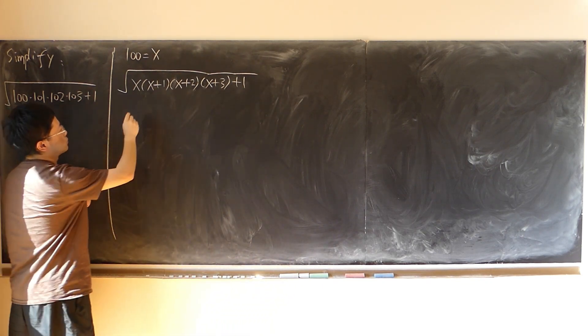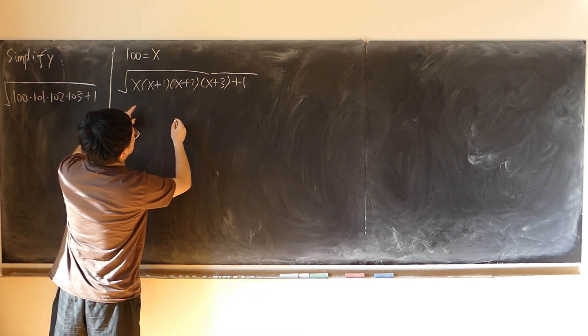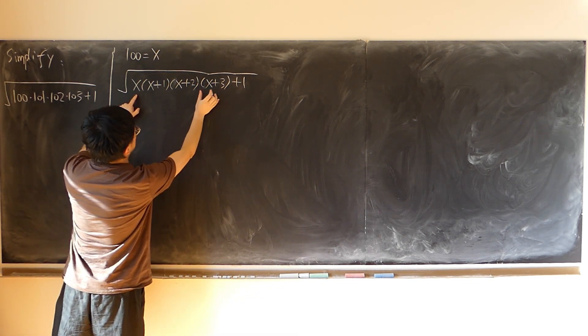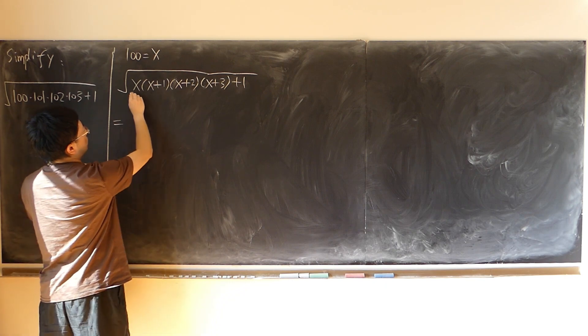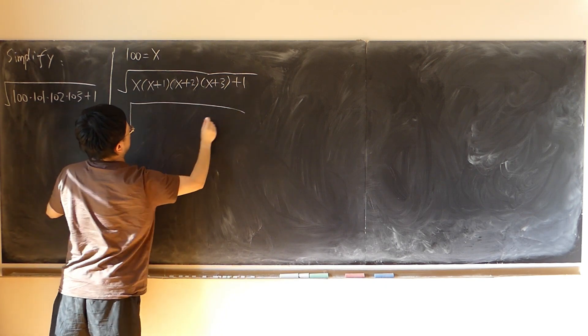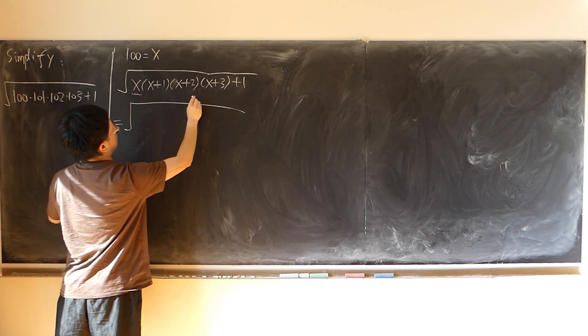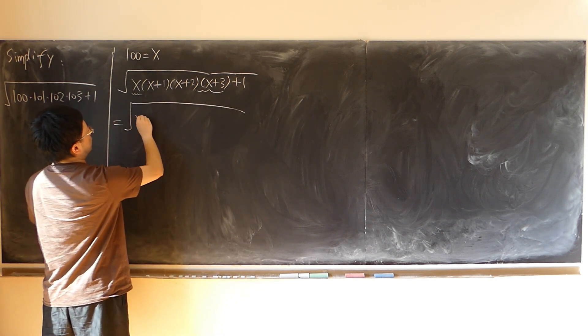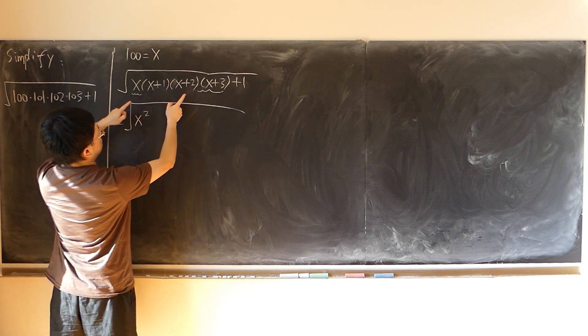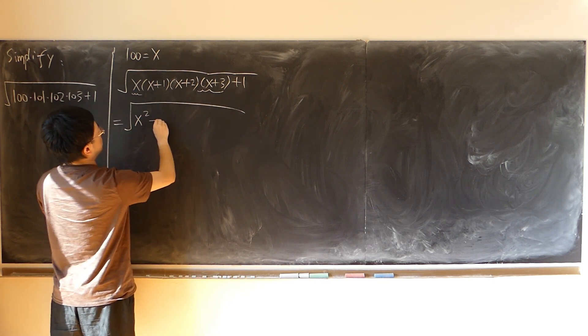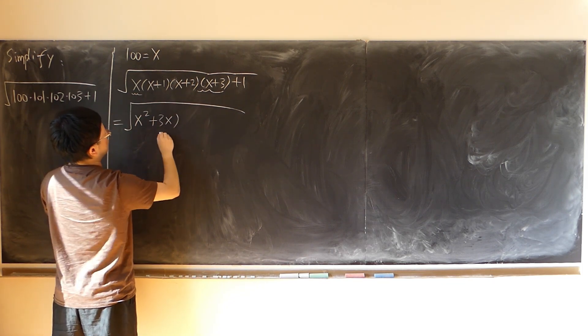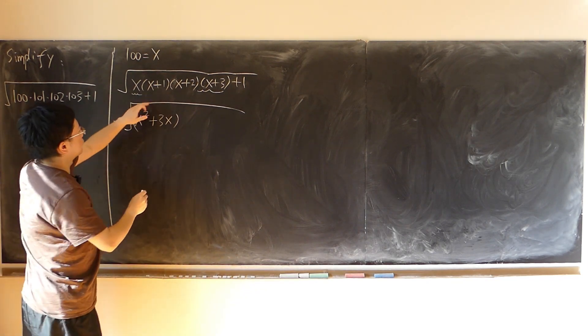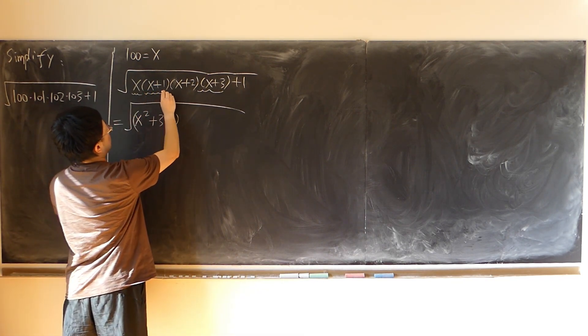Now if we observe this, I want to multiply the first term and last term. By doing so, that'll give me x squared first, then give me 3x. So that's a whole identity.